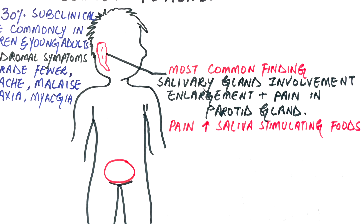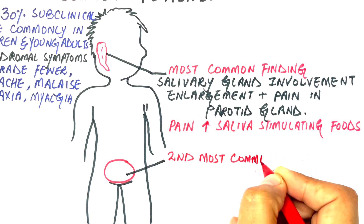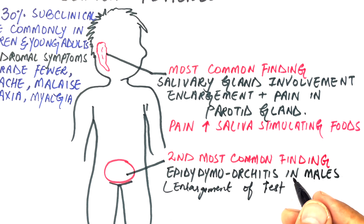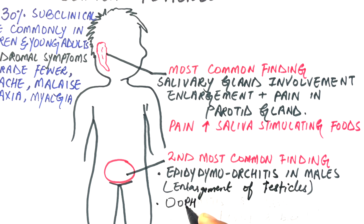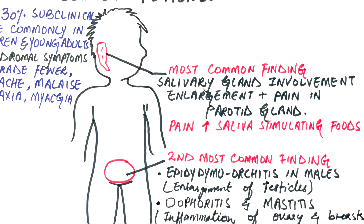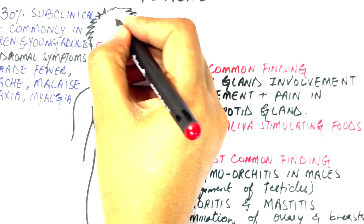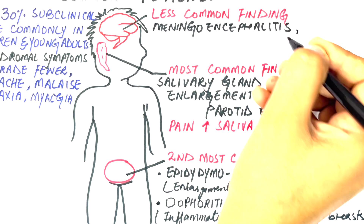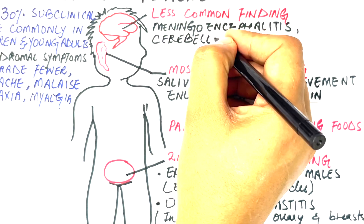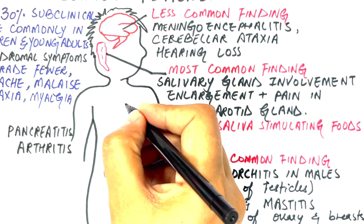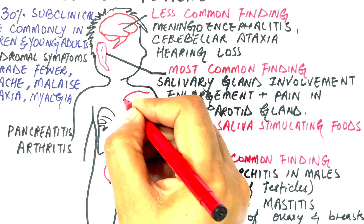The second most common finding is epididymal orchitis, or enlargement of the testicles, which occurs in about 25% of post-pubertal males. In post-pubertal females, oophoritis or inflammation of the ovary and mastitis or inflammation of breast tissue can be seen. Less common clinical presentations caused by the mumps virus include meningoencephalitis, cerebellar ataxia, hearing loss resulting from involvement of the middle ear, pancreatitis, arthritis, carditis, and decreased renal function.